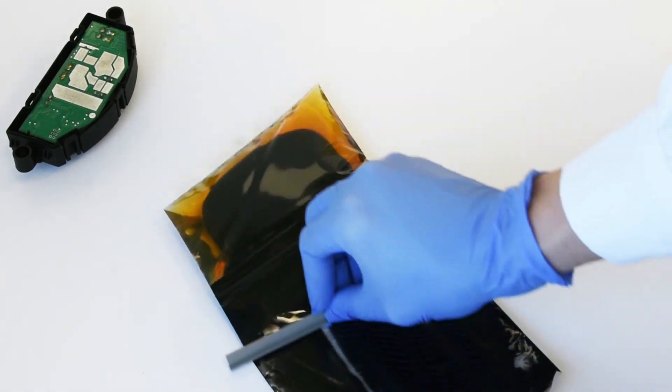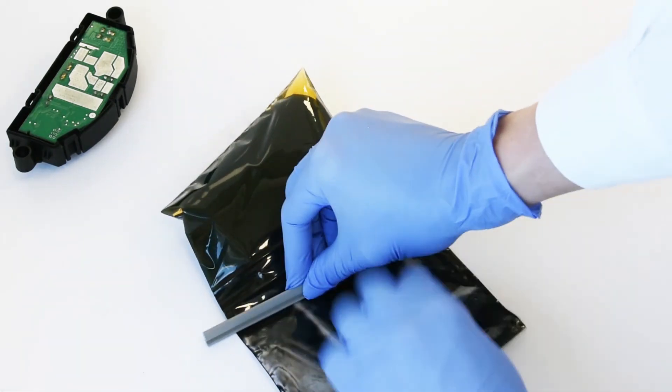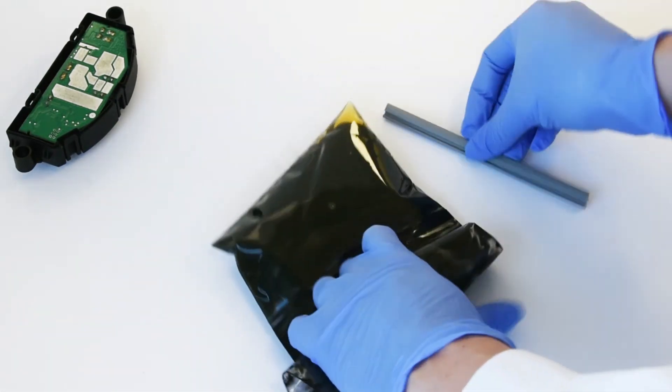Using the removed plastic clip, push all of the Part A into the Part B section and begin mixing by moving the resin around in the bag with your hands.